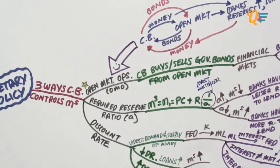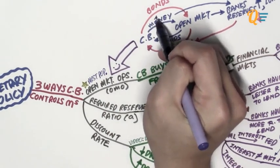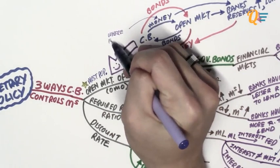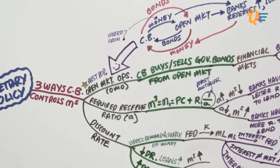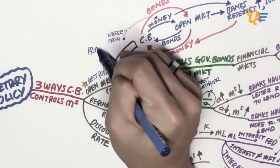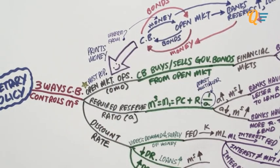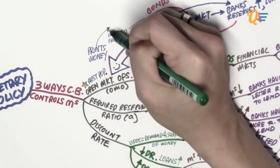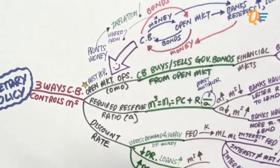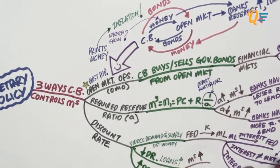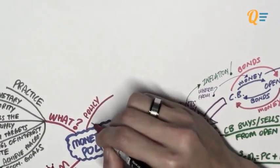Of the three methods, open market operations is the most popular method adopted around the world. When the central bank buys bonds, it pays by printing its own currency, and the problem with printing money is that it causes inflation in the long run — a topic for the next chapter.